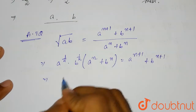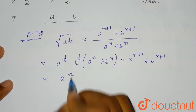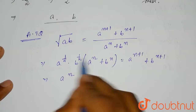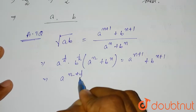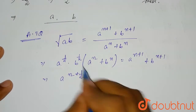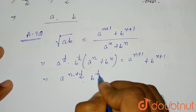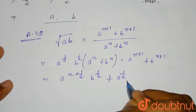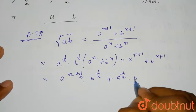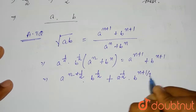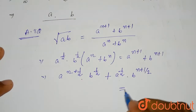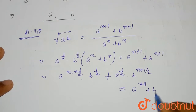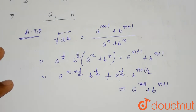Expanding the left side: multiplying a^(1/2) × b^(1/2) by a^n gives a^(n + 1/2), and multiplying by b^n — since the base is the same, powers are added — gives b^(n + 1/2). Similarly, b^(1/2) × a^(1/2) gives a^(1/2) × b^(n + 1/2). This equals a^(n+1) + b^(n+1).